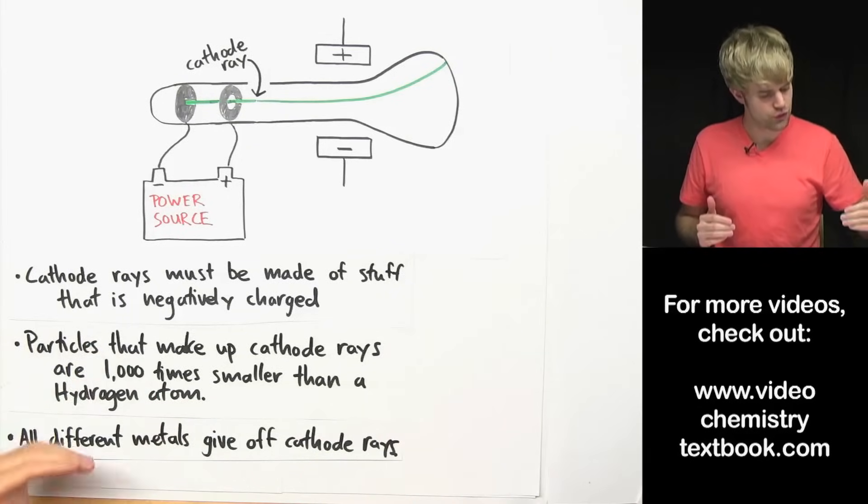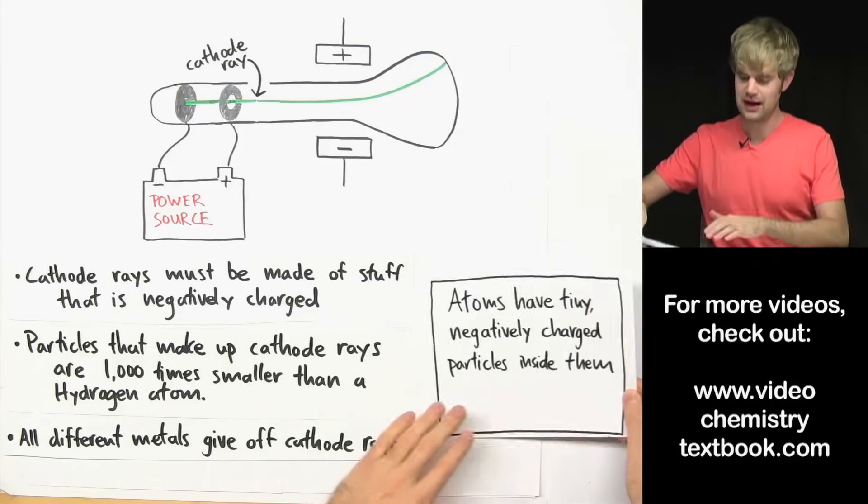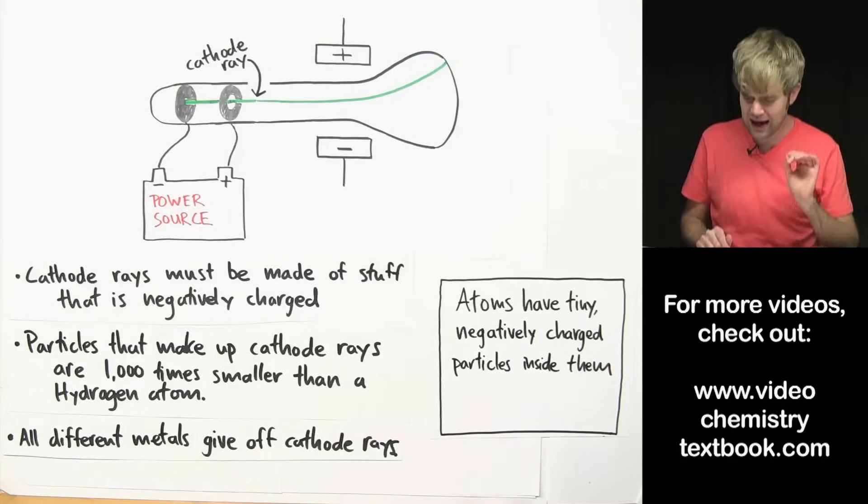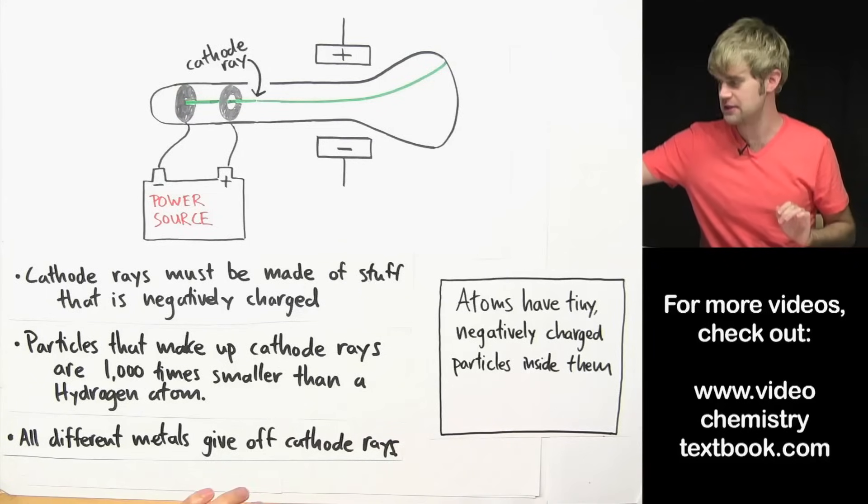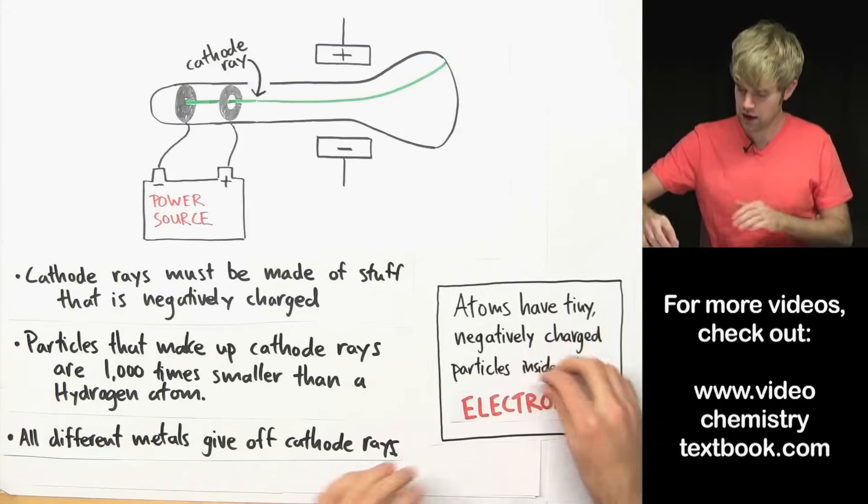So, based on these three conclusions, he's able to come up with the idea that atoms have tiny negatively charged particles inside them and these things that we're talking about here are electrons.